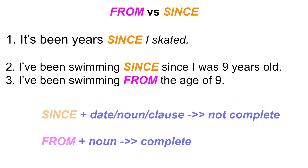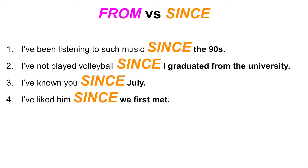When using 'from', we lack information about whether the action is still ongoing. What matters is what you put after these words: after 'since' you should put a date, a noun, or a whole clause. The action with 'since' is usually not complete, while 'from' shows a complete action indicating just the starting point. For example: 'I've been listening to such music since the 90s' — I measure the duration, showing that since the 90s I started and have been doing that all this time and still do.